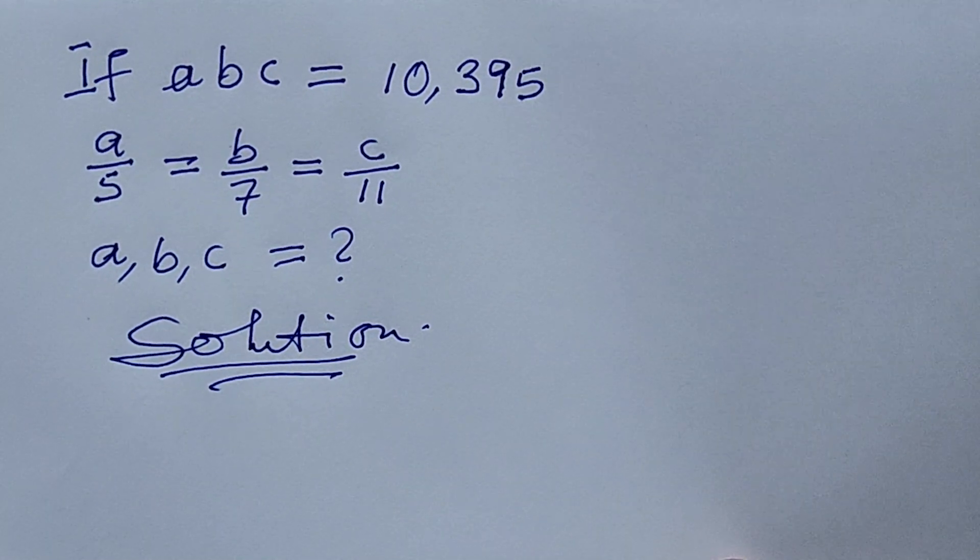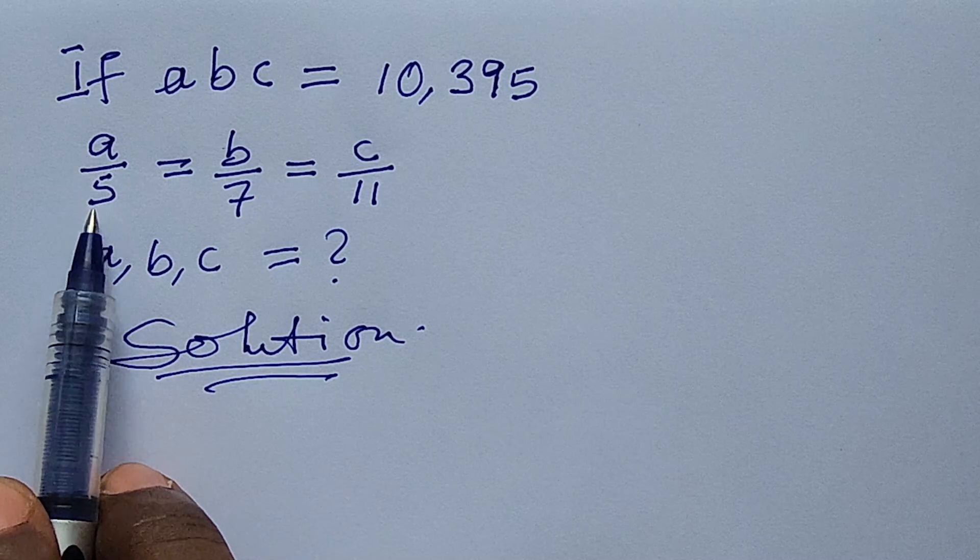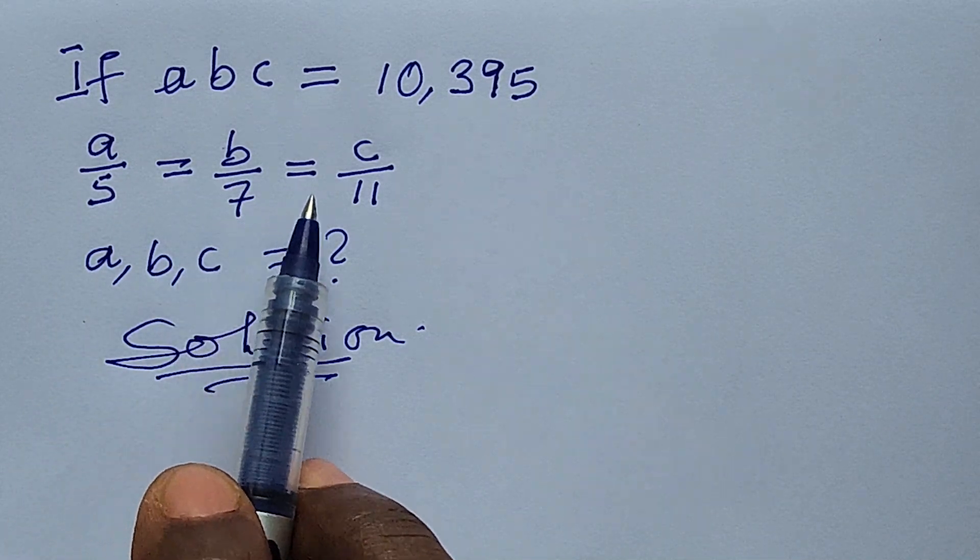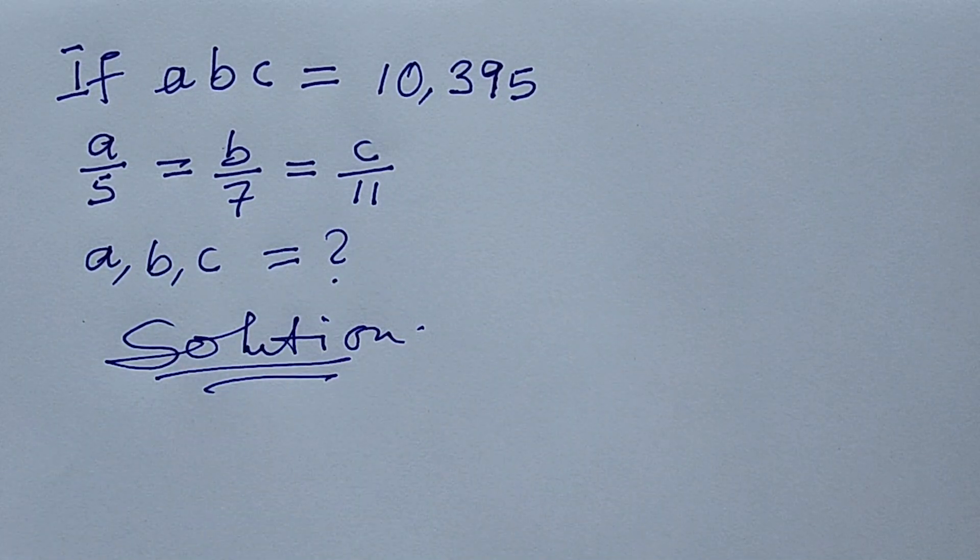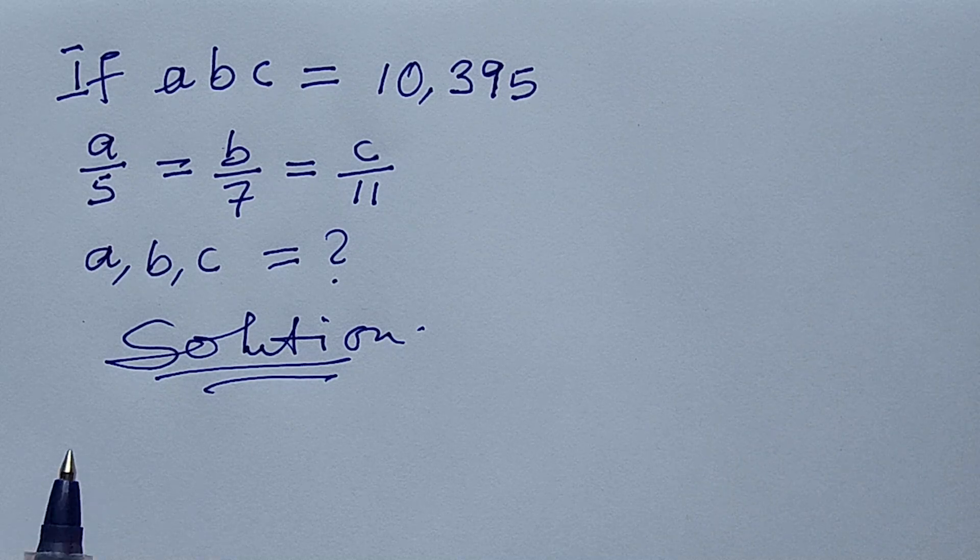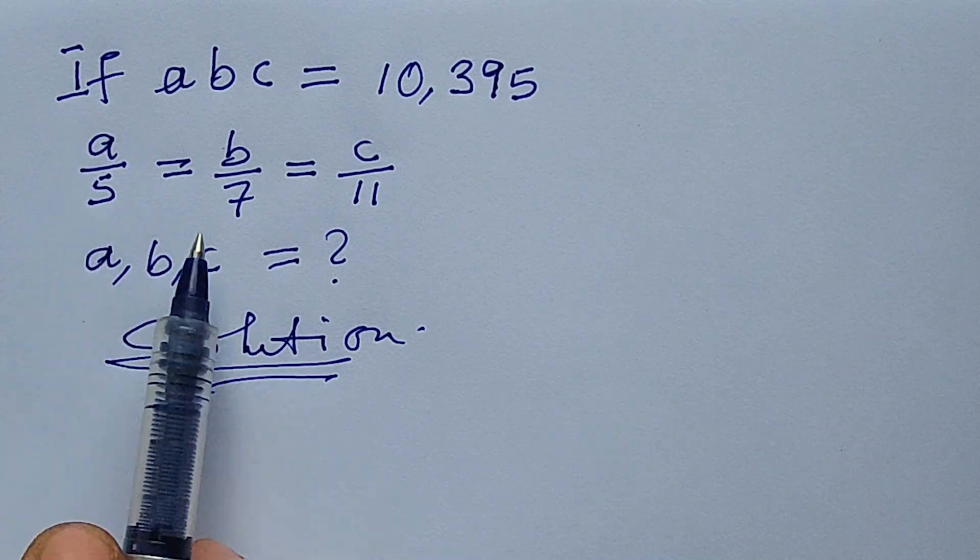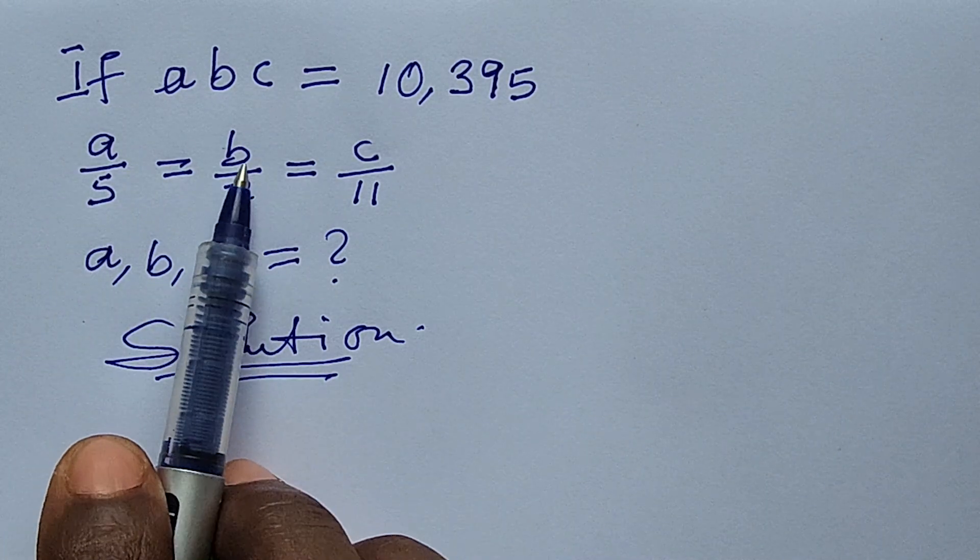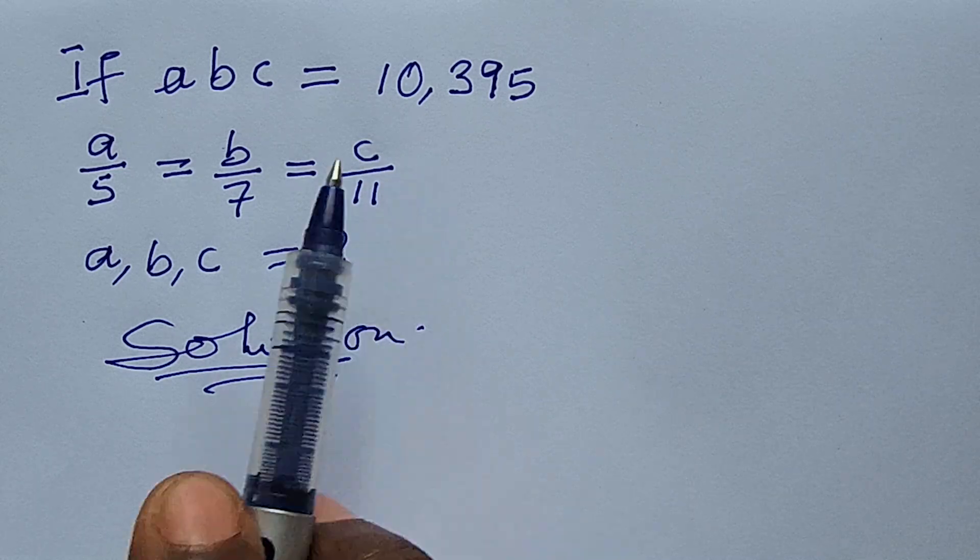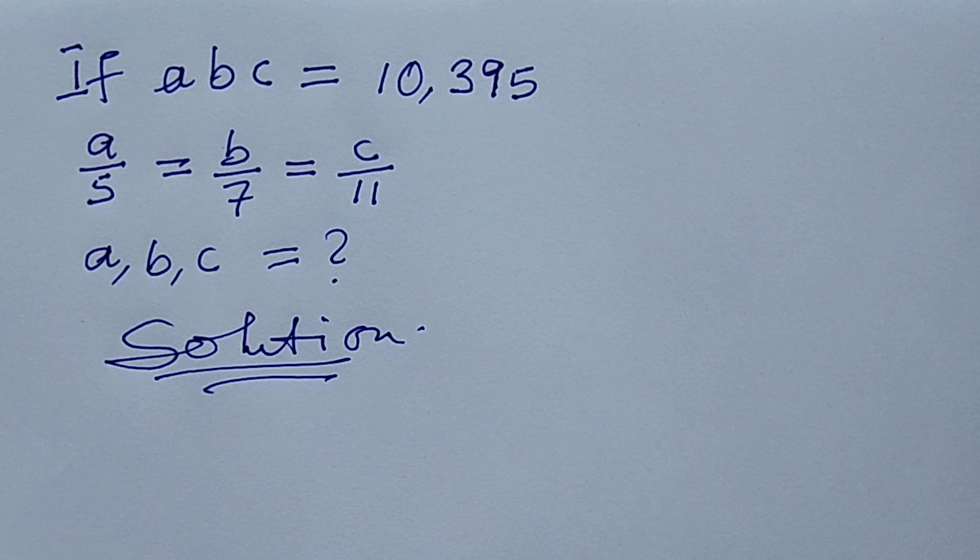Now if we look at the fraction given here, we have a/5 = b/7 = c/11. It means the quantity here is equivalent to the quantity here and it's equivalent to the quantity here. So how do we handle this?